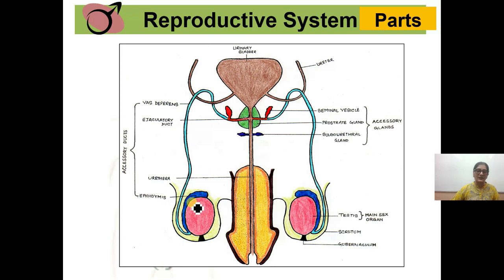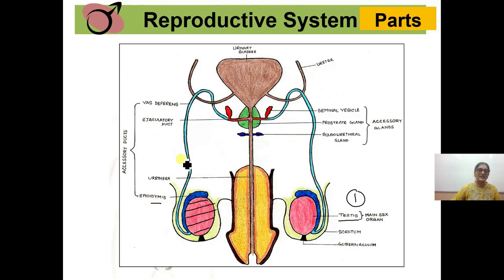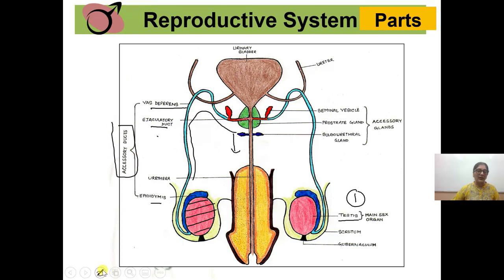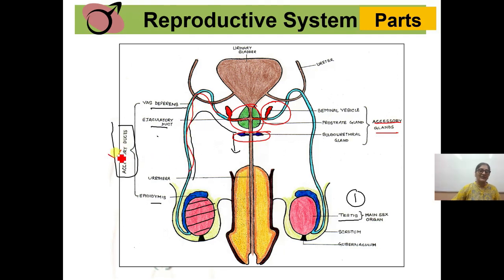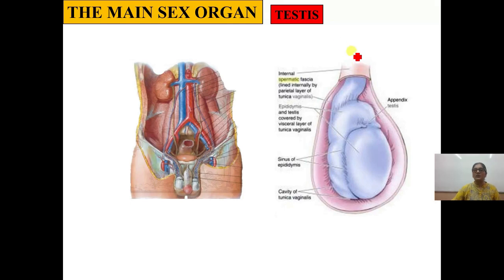Let me show you the parts of the male reproductive system. The primary reproductive organ is the testis — the main sex organ. The accessory ducts include the epididymis, then the vas deferens, then the ejaculatory duct — all these tube-like structures are the accessory ducts. And there are three accessory glands: the seminal vesicle, the prostate gland, and the bulbourethral gland.